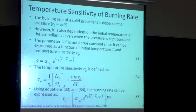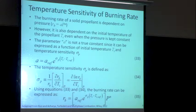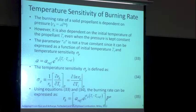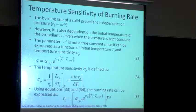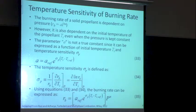Temperature sensitivity is a second very important metric. If I find the propellant burning rate is sensitive to initial temperature, because it's in the exponential, I don't have to change the temperature very much and it will have a dramatic effect on the burning rate. For example, if I'm storing this propellant in Arizona at a certain temperature versus Alaska in winter at a different temperature, how much difference will that make to the burning rate?